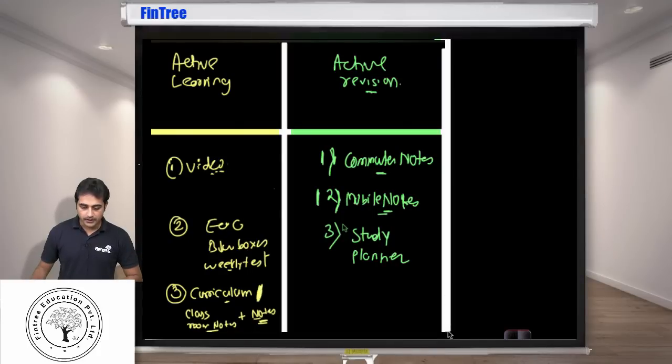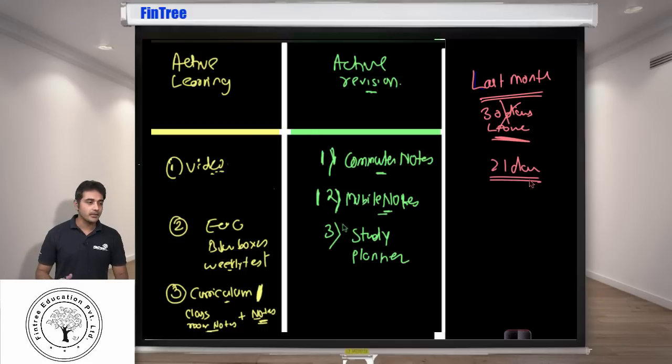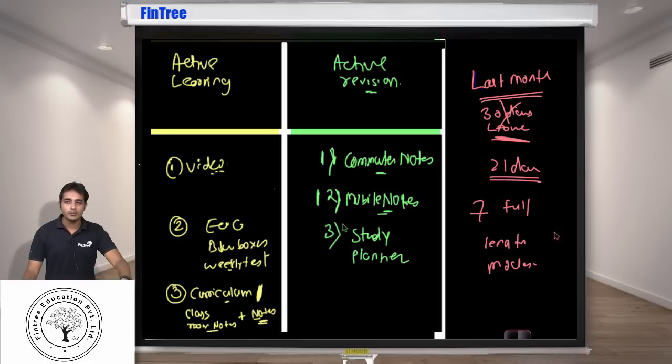And now the last part which was essentially about your last month. Now the best strategy here is to have entire 30 days of leave. It will give you a reasonable time to revise. If not 21 days. Anything less than that you're in trouble. So at the minimum the leave that we're looking at is 21 days. This is the time when we will have seven full-length mocks.